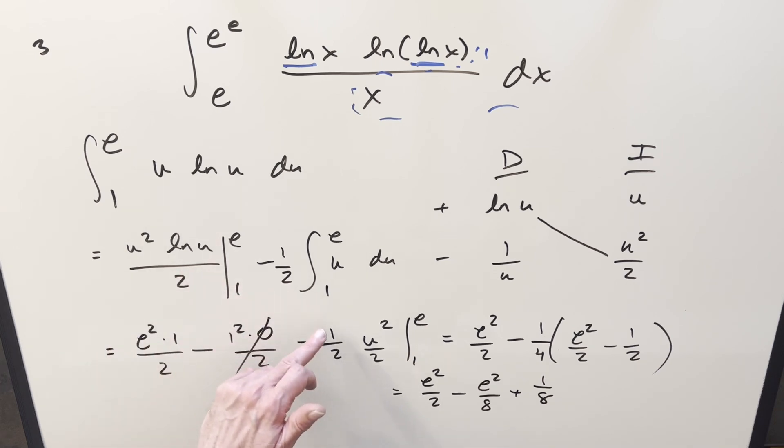You're getting some real-time error checking here. This is behind-the-scenes footage that you don't usually get on YouTube. So then here, let's see, we get u² over 2 evaluated from 1 to e minus 1 fourth. Oh, okay, sorry. So this half went here with the 1 fourth, and we don't actually have this piece right here.